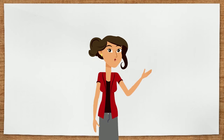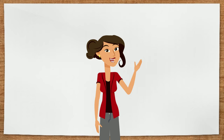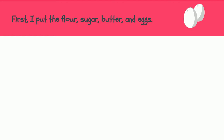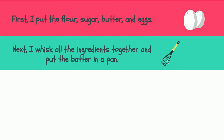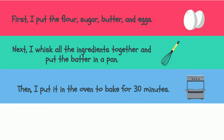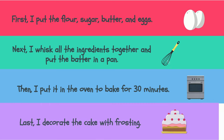Let's see if I can use these words to tell you how I bake a cake. First, I put the flour, sugar, butter, and eggs. Next, I whisk all the ingredients together and put the batter in a pan. Then, I put it in the oven to bake for 30 minutes. Last, I decorate the cake with the frosting.